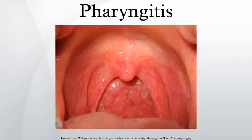Oral analgesic solutions — the active ingredient usually being phenol, but also less commonly benzocaine, cetylpyridinium chloride, and/or menthol — are also used. Chloraseptic and Cepacol are two examples of brands of these kinds of analgesics.